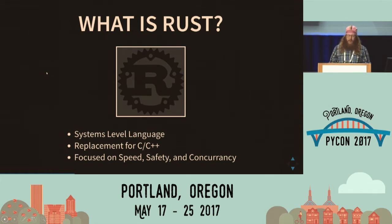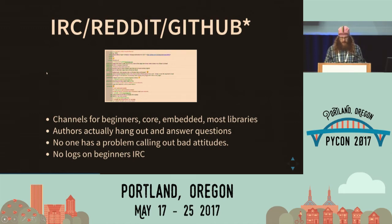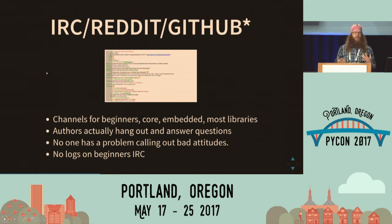This talk is a few examples of things that really set them apart. First of all, Rust is everywhere: Reddit, IRC, Stack Overflow, GitHub. The authors of all the major libraries, including the core, are there answering questions for the bugs you file. No one has a problem in any of these spaces saying your attitude is not welcome. Please don't tell people to let me Google that for you. There are no logs in the beginners channels, which means you don't have any decade-old Usenet posts of when you were a noob.